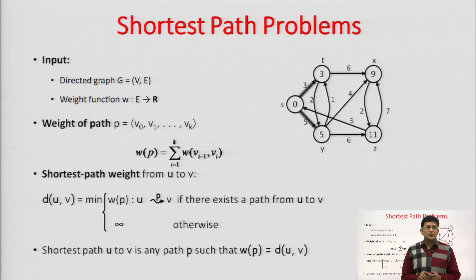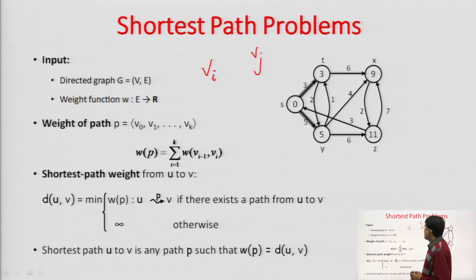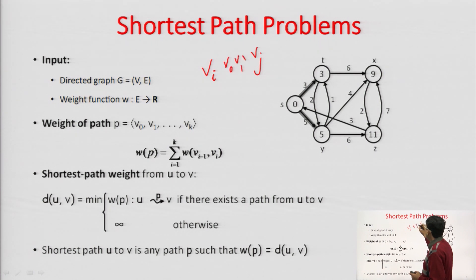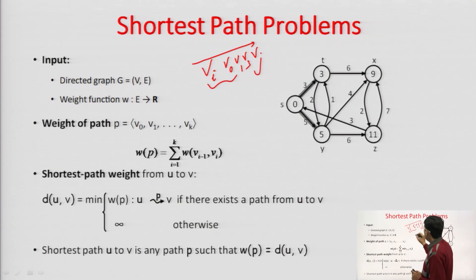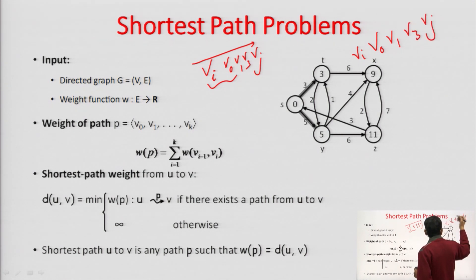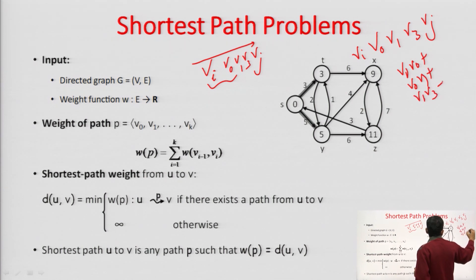For finding out the shortest path, you must have an idea about the path first. If you have vertices i and j and you have to go from i to j, you may visit various stations in between — you may visit vertex 0, vertex 1, vertex 3 and then finally reach vertex j. The sequence of vertices tells you the path, and the weight of the path is the sum of the edge costs of all edges along it. So the total path cost would be: cost of edge (vi, v0) + cost of edge (v0, v1) + cost of edge (v1, v3) + cost of edge (v3, vj).